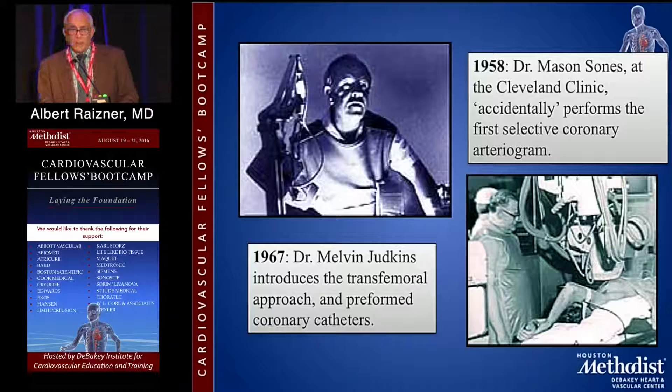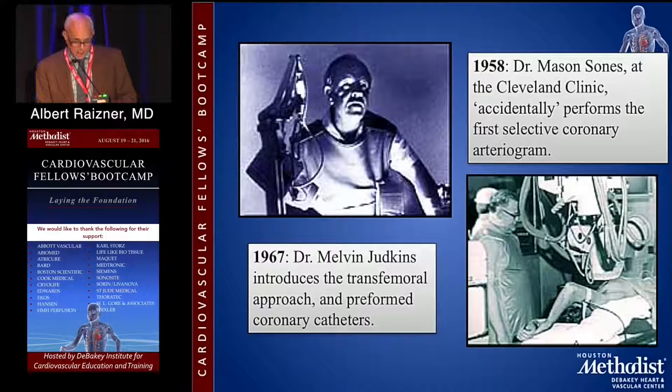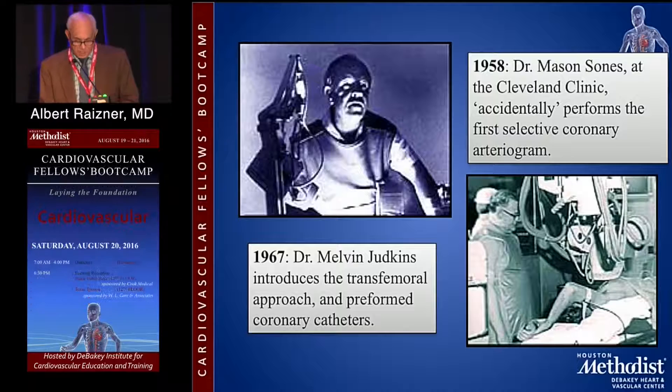A big advance was made in 1967 when Melvin Judkins in California designed some pre-shaped catheters that could find left coronary arteries and right coronary arteries fairly easily. This opened up the field to many, many people at that time — radiologists initially. Subsequently, the field of coronary angiography and cardiology grew and superseded the radiology portion.